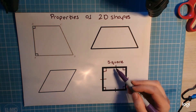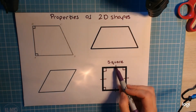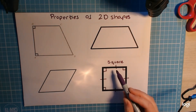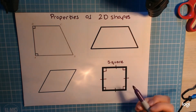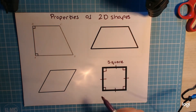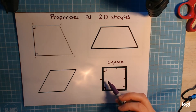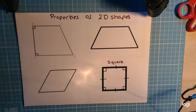You do need to know these properties, particularly about the equal sides, because often in exams you'll be told about a shape which has four right angles and four equal sides and they won't tell you it's a square. Once you know it's a square, you'll be able to continue with the question.